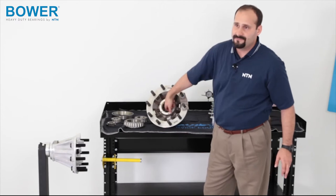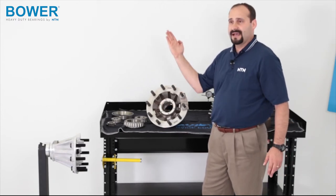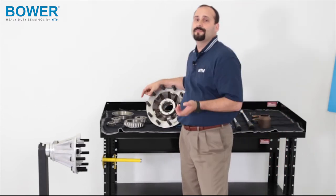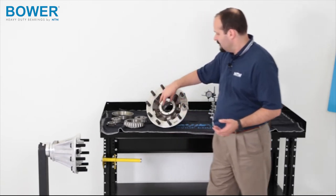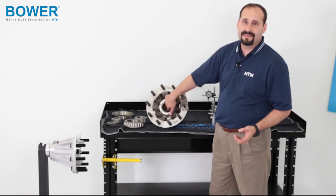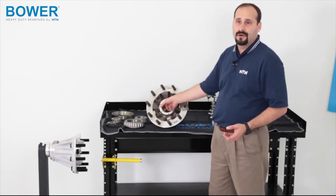The reason for that is we want to make sure this race is pushed all the way in and it's pushed in flush and even all the way around. If you go all the way around and find out it goes in at one point, the race is cocked and that can result in lower bearing life than you would normally get from a proper installation. So again, push all the way in and check with a one thousandth inch feeler gauge all the way around.